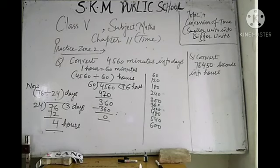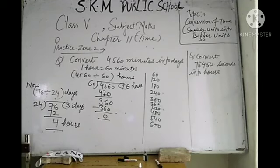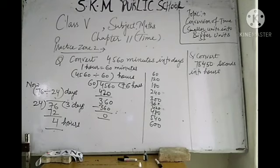Question number 2: convert 78,450 seconds into hours. To do this, first the seconds will be converted into minutes, then whatever minutes you get will be converted into hours by dividing again by 60.